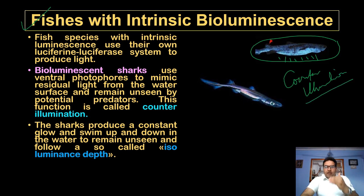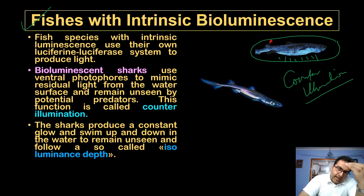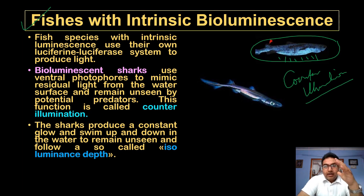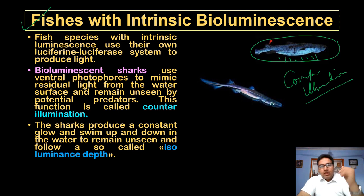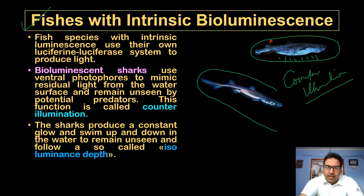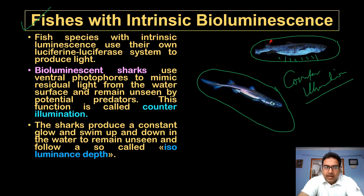In counter-illumination, a predator present below sees only what appears to be sunlight from above and is unable to detect the shark. Some other sharks produce a constant glow and swim up and down in the water to remain unseen, following what is called the isoluminescence depth.